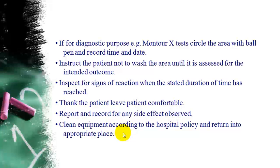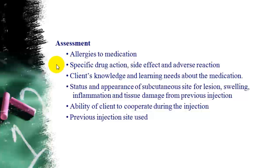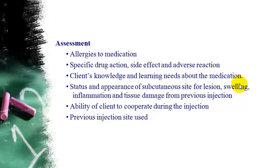Assessment before injection: check for allergies to medication, specific drug action, side effects and adverse reactions, patient's knowledge and learning needs about the medication. Also assess the status and appearance of the subcutaneous injection site — look for swelling, firmness, tissue damage, or scarring from previous injections. Do not inject into areas with wounds, scarring, or visible blood vessels.